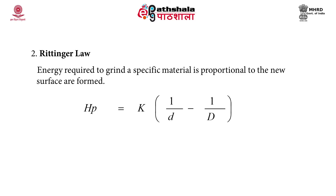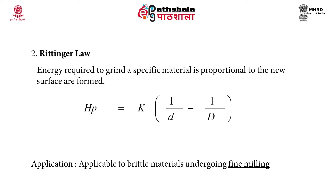According to Rittinger's law, the energy required to grind a specific material is proportional to the new surface area formed, given by: HP = K × (1/d − 1/D). This law is applicable for brittle materials undergoing fine milling.